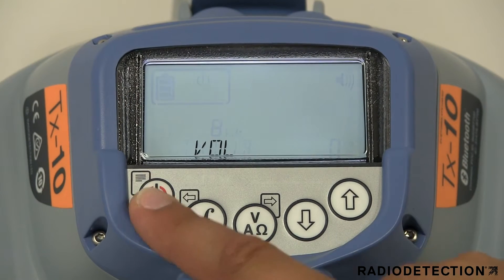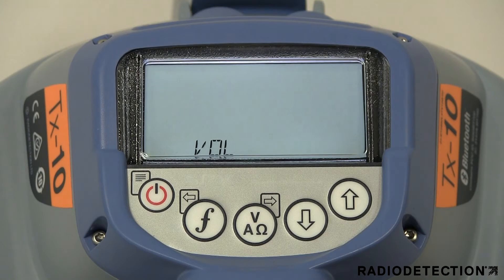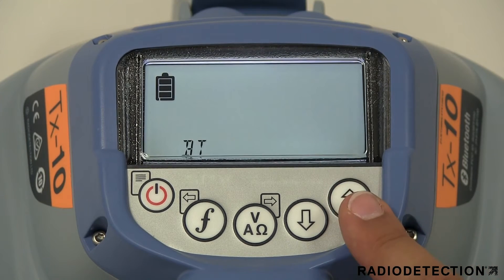To navigate the transmitter menu, momentarily press the power key to enter the menu. Use the up or down keys to scroll through the menu options.